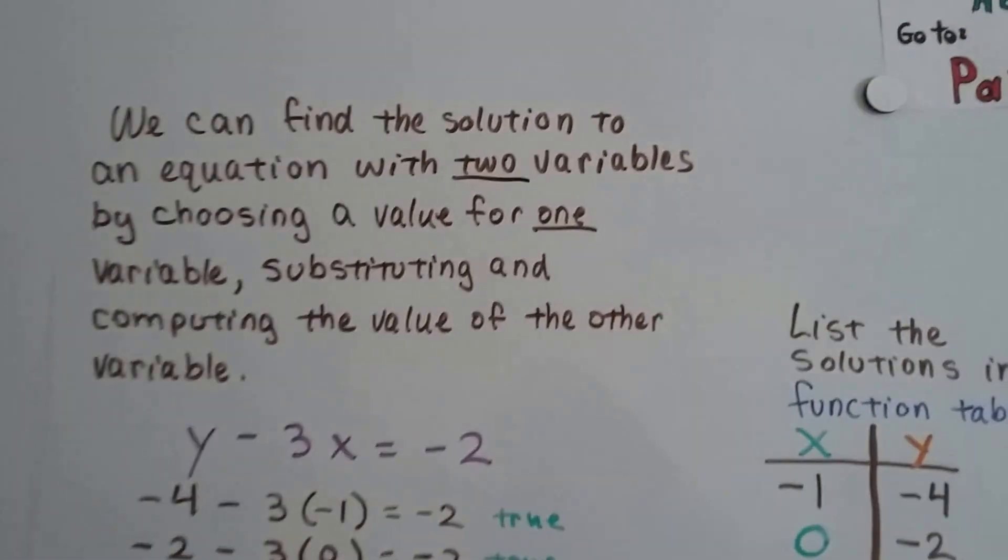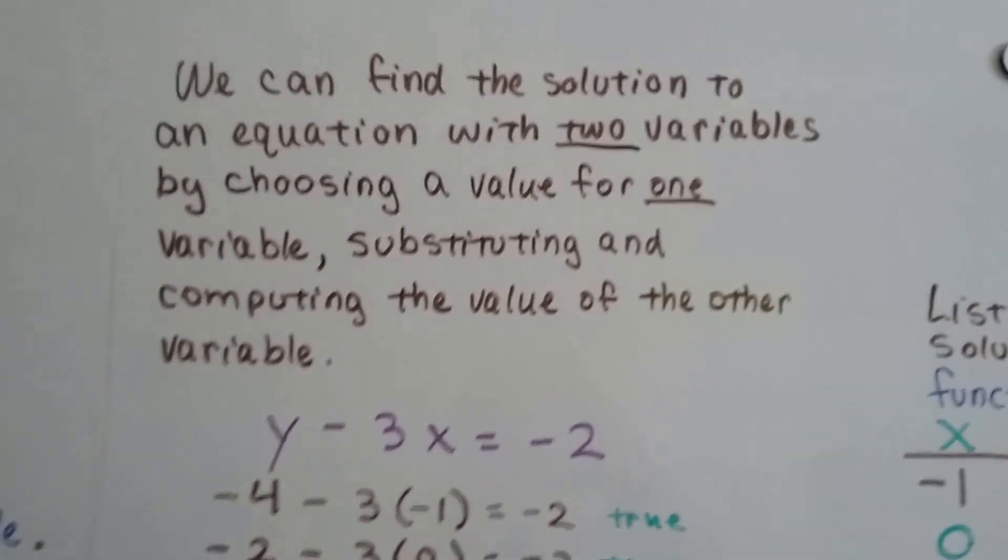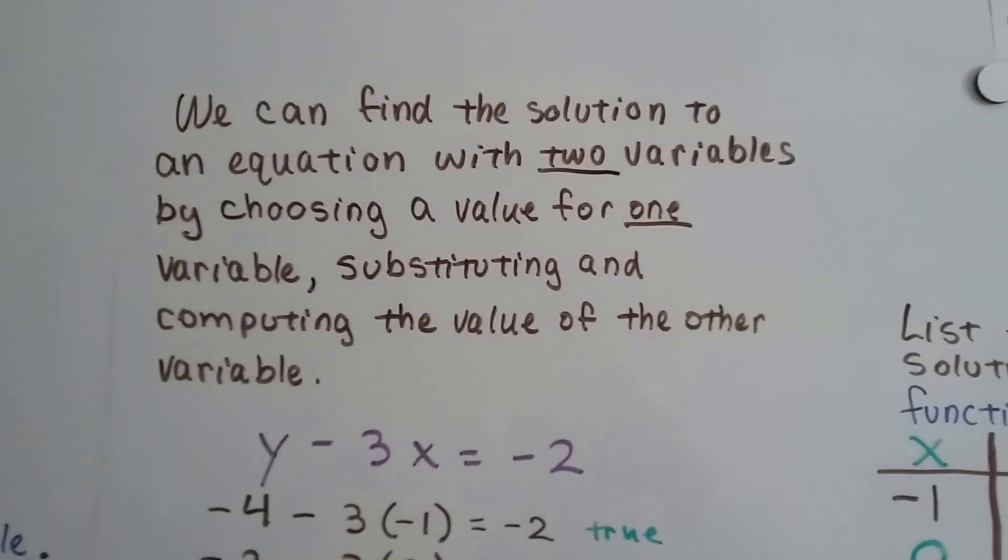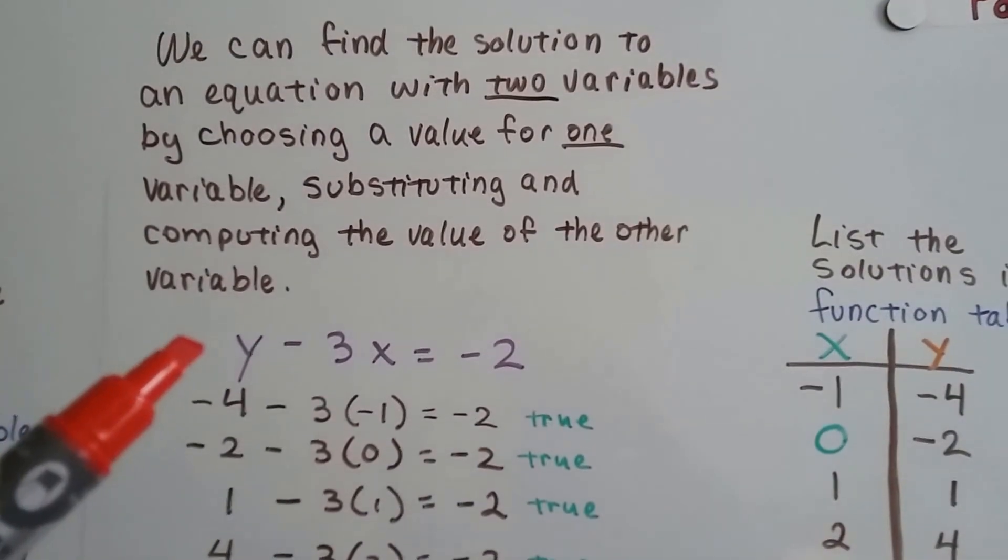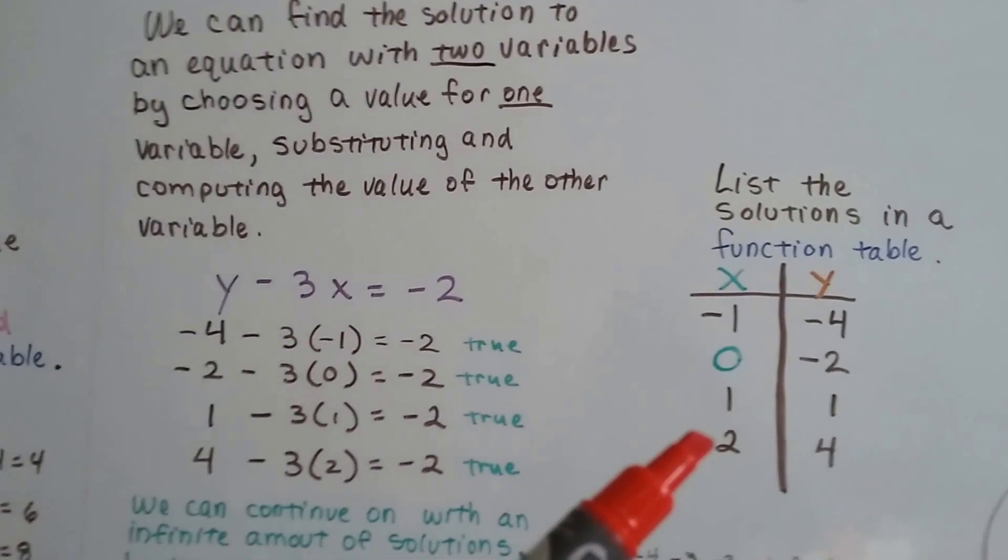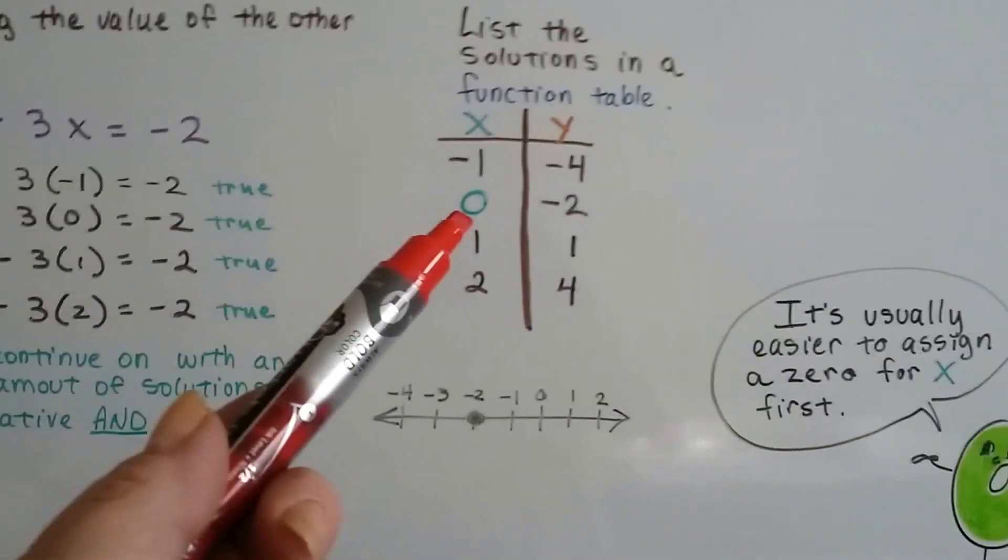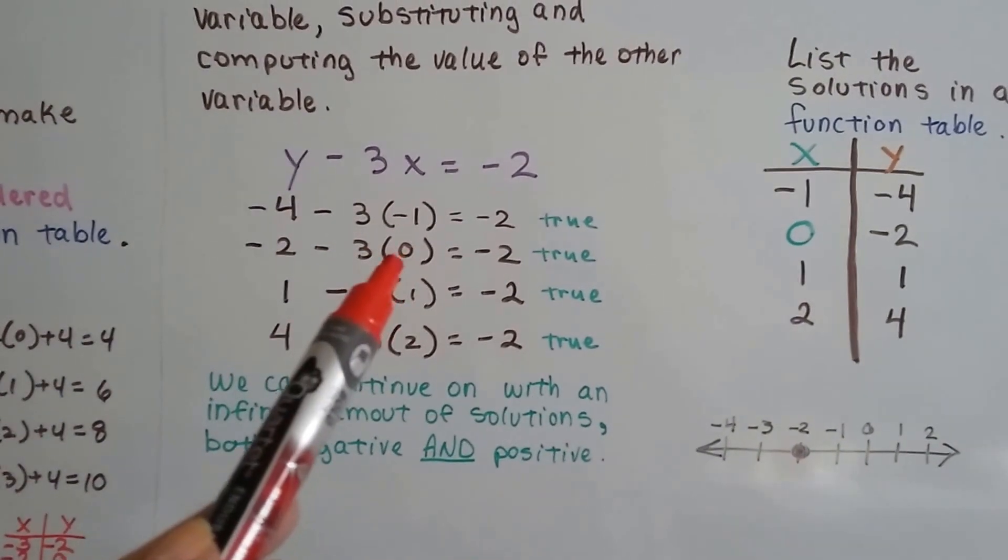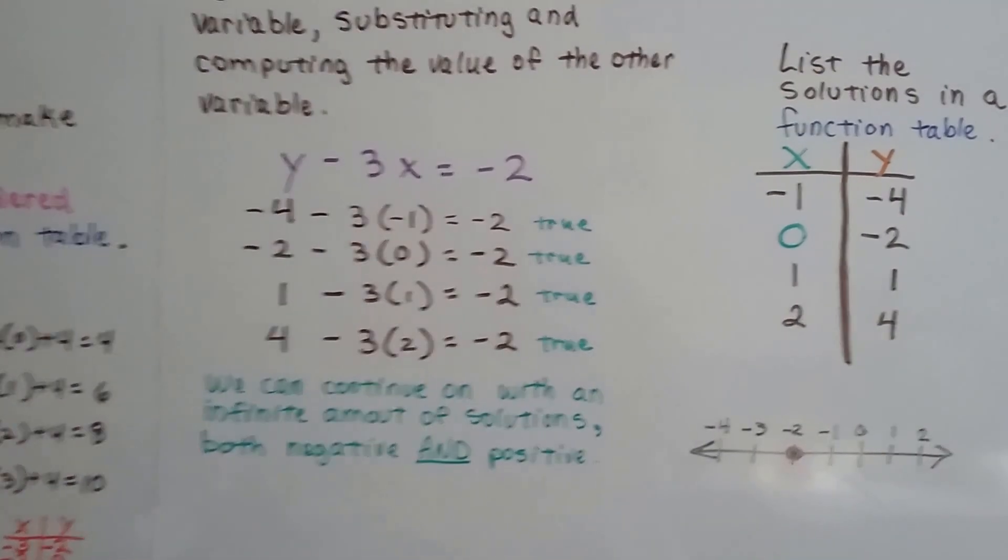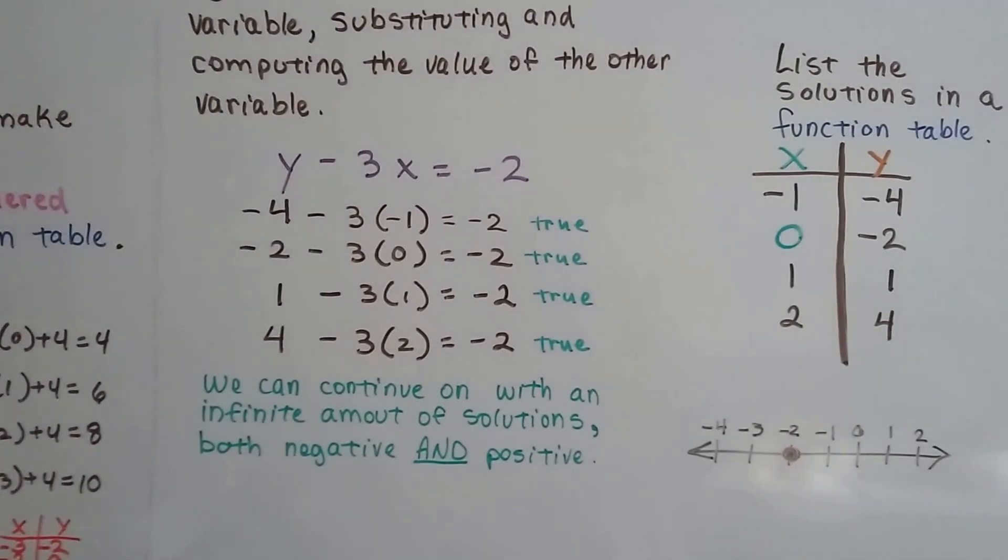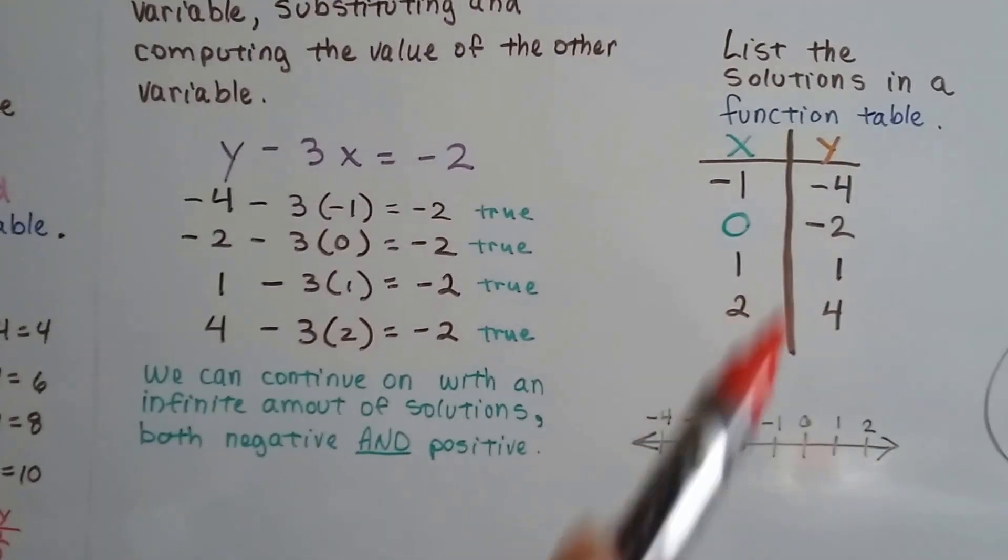We can find the solution to an equation with two variables by choosing a value for one variable, usually the x. But if the y is easier, start with the y. And substituting and computing the value of the other variable. So look at this one. We've got y minus 3x equals negative 2. So we can make our function table. And it's usually easier to assign a 0 for x first. So let's do that. And we're going to put a 0 here for the x. We get 3 times 0 is 0. So what number can we have that we can take a 0 away from and have a negative 2? Well, negative 2 take away 0 is negative 2. So that's our y value, negative 2.